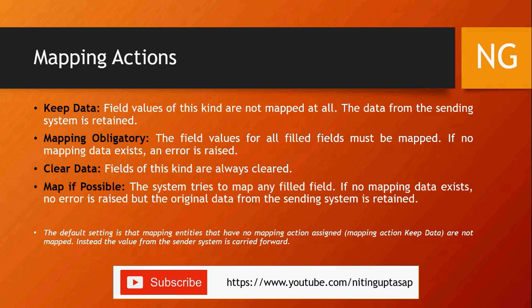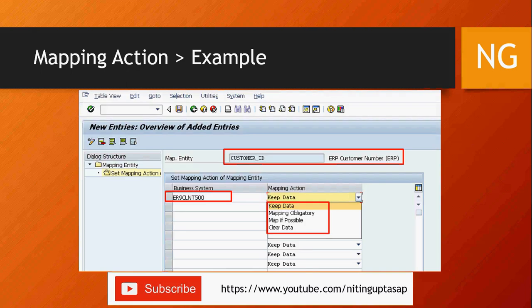By default, each object in SAP has a default mapping action. When you start a CFIN project with no mapping action assigned — it's blank — it's basically Keep Data. For example, my object is Customer, business system ER9 client 500, mapping action: Keep Data.